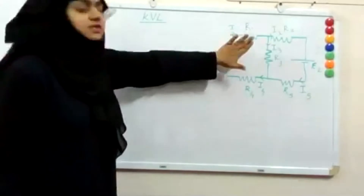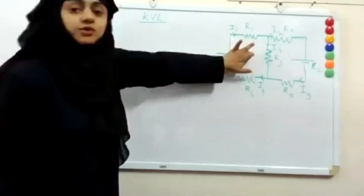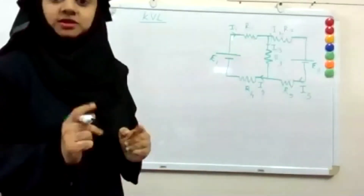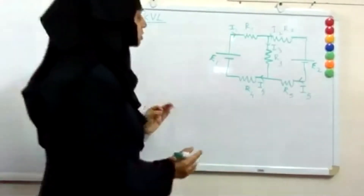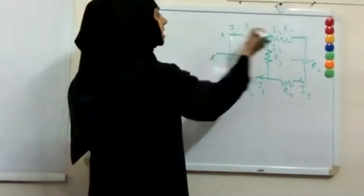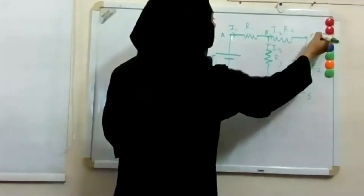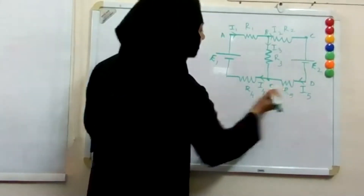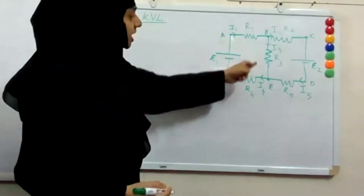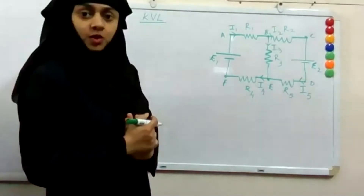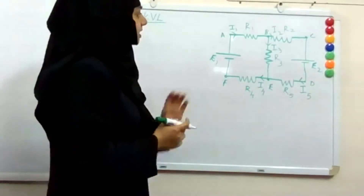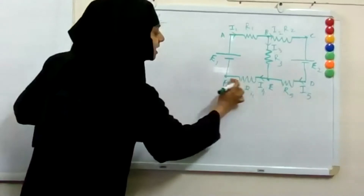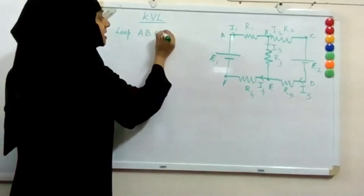This is roughly any circuit. I just want to show you how we can use Kirchhoff's voltage law to write an equation. First, we have to consider a loop. To name the loop, I am putting points A, B, C, D, E, F. Let us take the loop A, B, E, F, A.